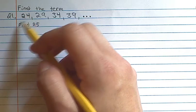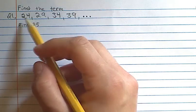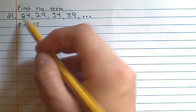That would be how do we get from 24 to 29, from 29 to 34. So in this case, to get to each number we add 5.